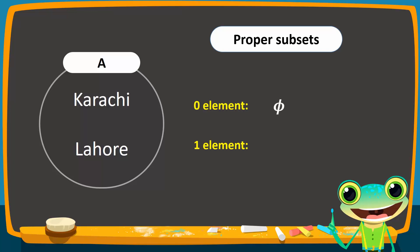Since there are two elements in set A, there will be two subsets with one element each. The first one contains Karachi, the other contains Lahore.